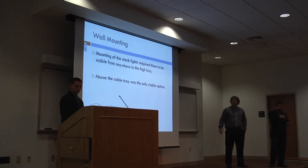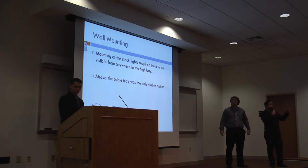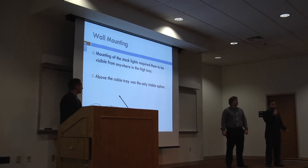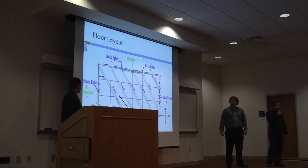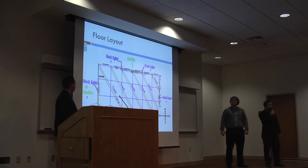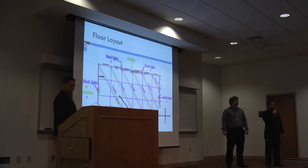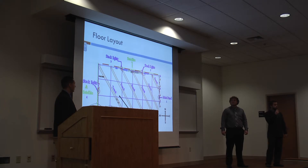As for the locations of the stack lights, they require that they be high enough to be visible throughout the whole AEC High Bay Area. The only viable option was to place them above the overhead cable trays. This is the floor layout that shows where the stack lights, the satellite panels, and the master panel will be located. The main panel is conveniently located outside the offices, and the push buttons to activate the system will be placed directly below the stack lights.